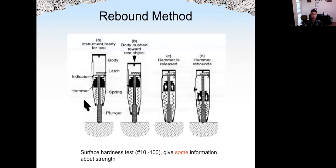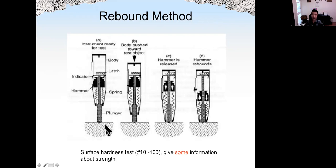The total weight of the rebound hammer is around 1.8 kilograms. Inside the rebound hammer, we have a hammer, plunger, and also a spring. What we do is push the plunger onto the surface of the concrete vertically, and then the spring will be released. Depending on the surface hardness of the concrete, the rebound of the plunger gives a so-called surface hardness number from 10 to 100, with a higher number corresponding to higher surface hardness.